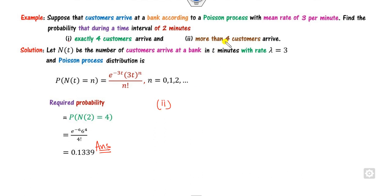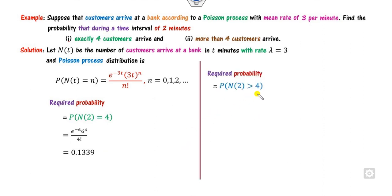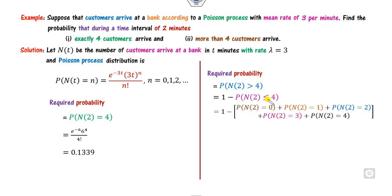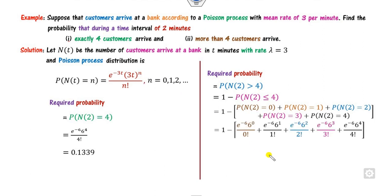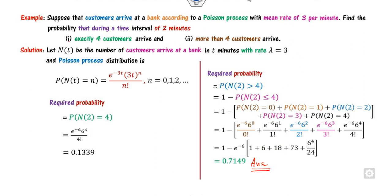For the second part — more than 4 customers in 2 minutes — write it as 1 minus P(N(2) ≤ 4). Substitute the values; take e^(-6) as a common factor after calculation to get the required answer.